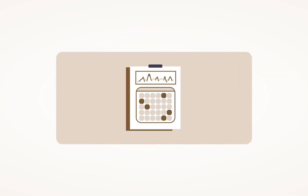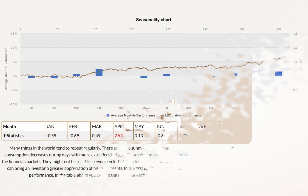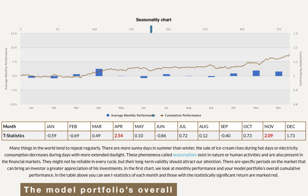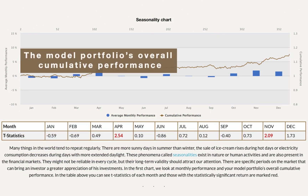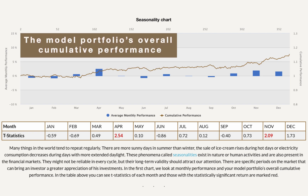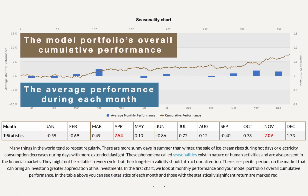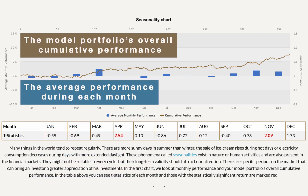The seasonality analysis report is split into two halves. The first section contains the seasonal chart with the model portfolio's overall cumulative performance over the average year, and the average performance during each month of the year.